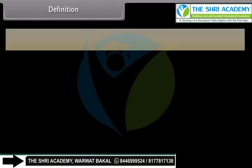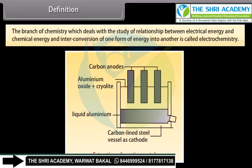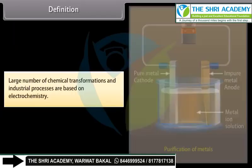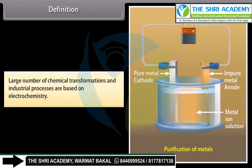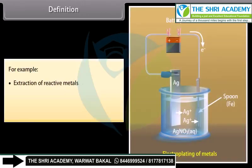Definition: The branch of chemistry which deals with the study of the relationship between electrical energy and chemical energy, and the interconversion of one form of energy into another, is called electrochemistry. A large number of chemical transformations and industrial processes are based on electrochemistry, for example, extraction of reactive metals, purification of metals, and electroplating of metals.